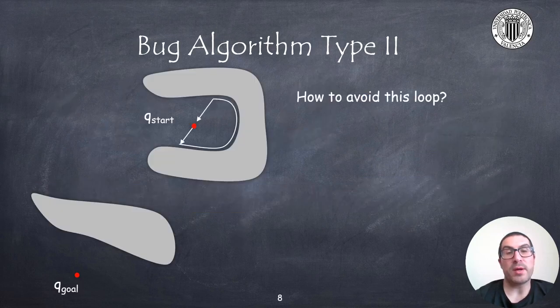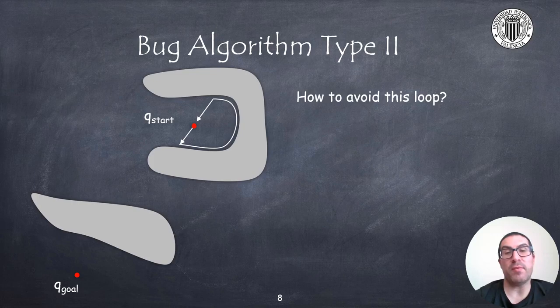However, there are cases in which, due to the shape of the environment, the robot can enter a loop situation as shown. Therefore, we must modify this algorithm to avoid this loop.